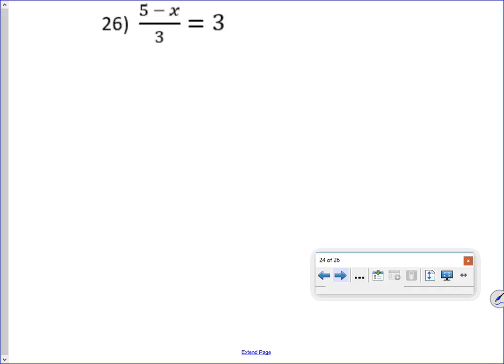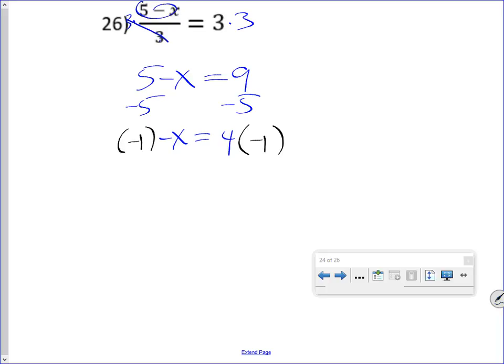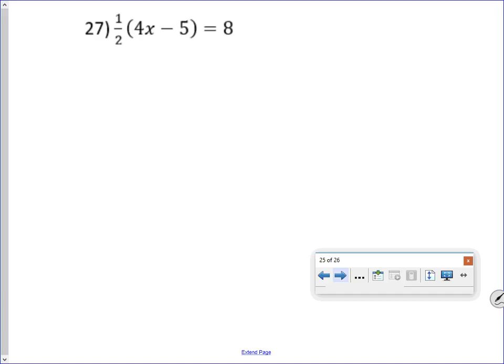All right, so here, all of this is being divided by 3, so we've got to get rid of the 3 first. I'll have 5 minus x equals 9, subtract 5 from both sides, I'll have negative x equals 4, multiply both sides by negative 1, and I'll get x equals negative 4. Once again, I know I'm going fast, but you have a rewind button on YouTube.